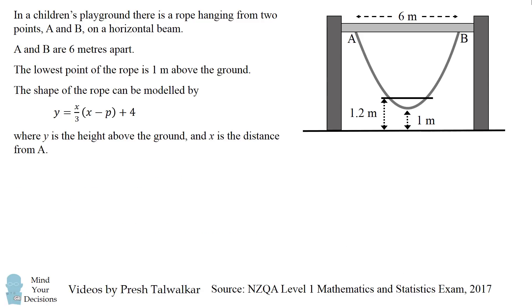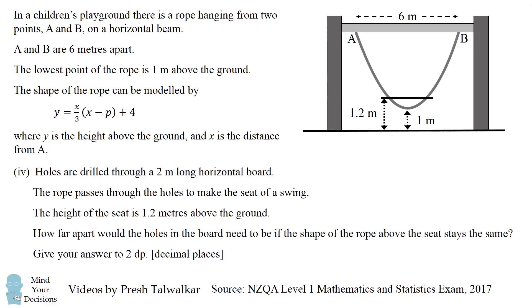And part 4, it comes with a slightly modified diagram. And here's the question. Holes are drilled through a 2 meter long horizontal board. The rope passes through the holes to make the seat of a swing. The height of the seat is 1.2 meters above the ground.